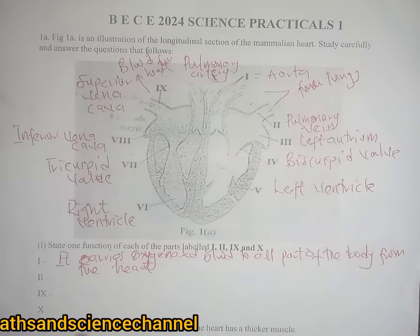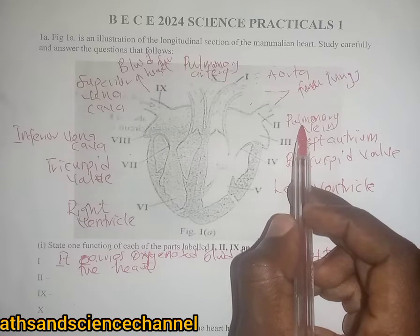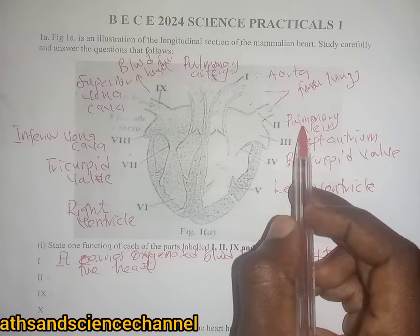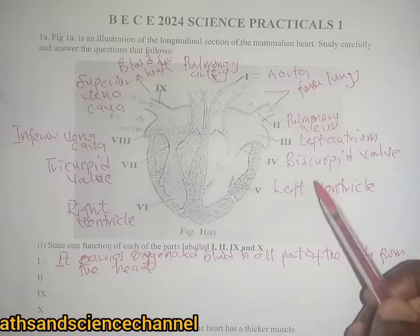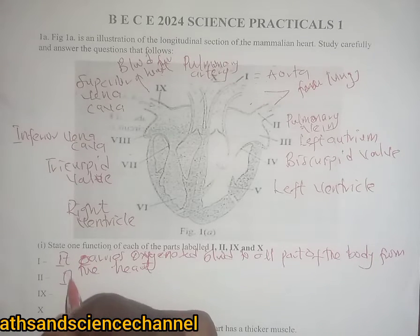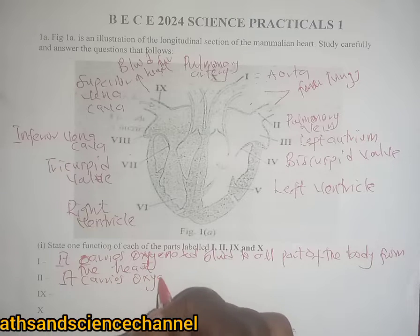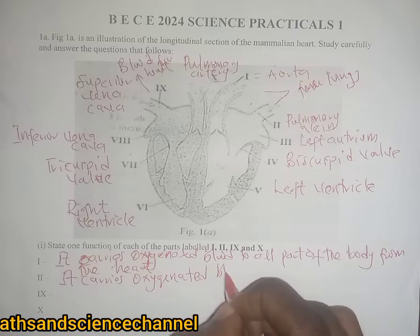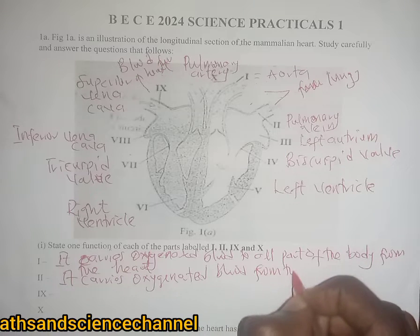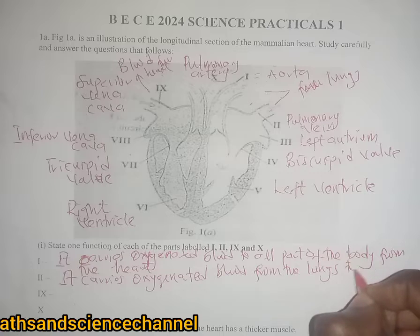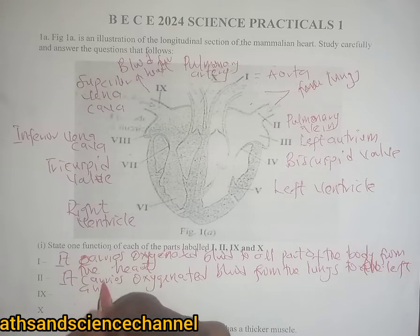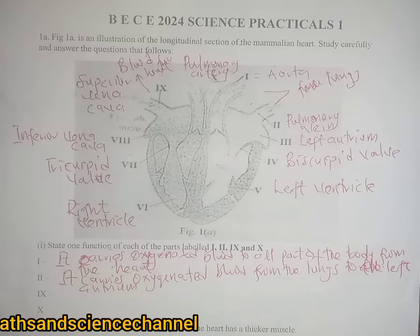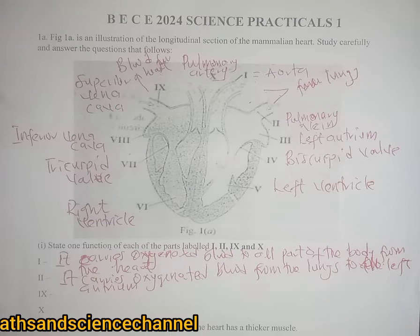Part ii is called the pulmonary vein. The function of the pulmonary vein is that it carries oxygenated blood from the lungs to the left atrium of the heart. So it carries oxygenated blood from the lungs to the left atrium.